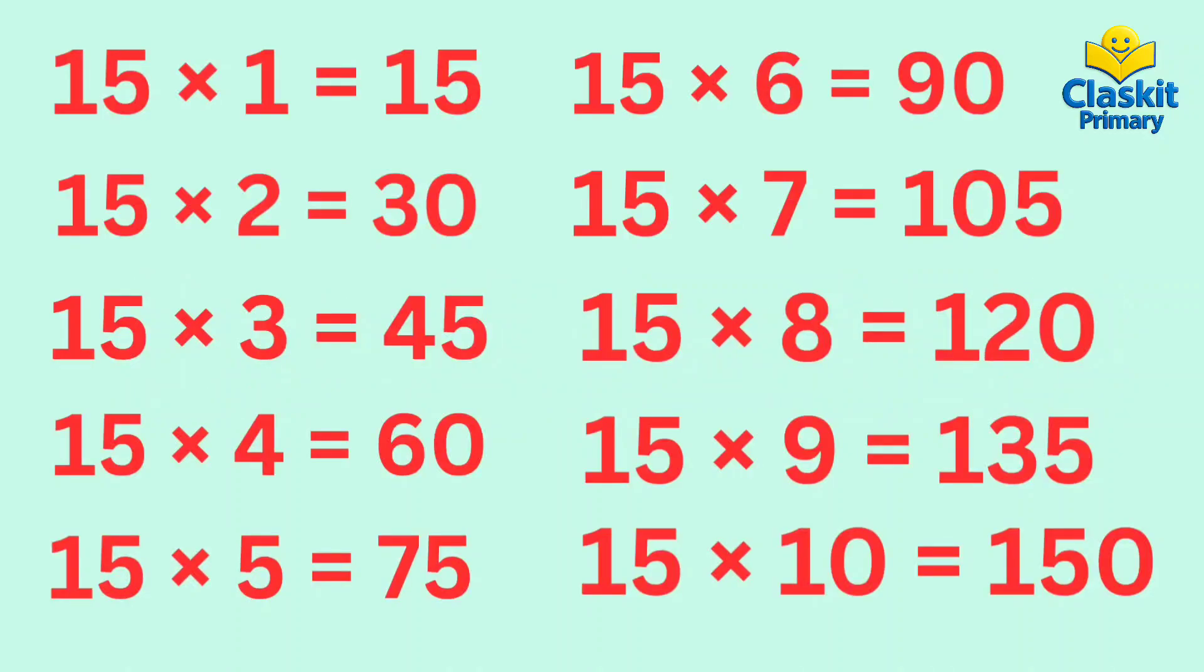Let's revise. 15 ones are 15, 15 twos are 30, 15 threes are 45, 15 fours are 60, 15 fives are 75, 15 sixes are 90, 15 sevens are 105, 15 eights are 120, 15 nines are 135, 15 tens are 150.